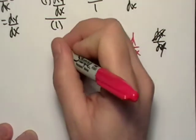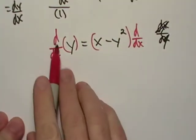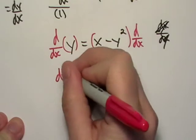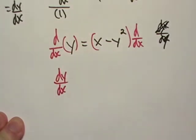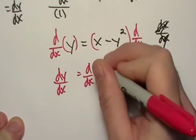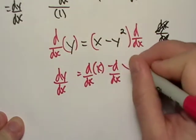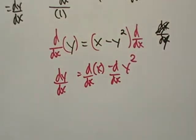So we do the same thing. We just take the derivative of both sides. Well, here we go. This is just going to be dy/dx. Then we have the derivative with respect to x of y squared. So we got that.